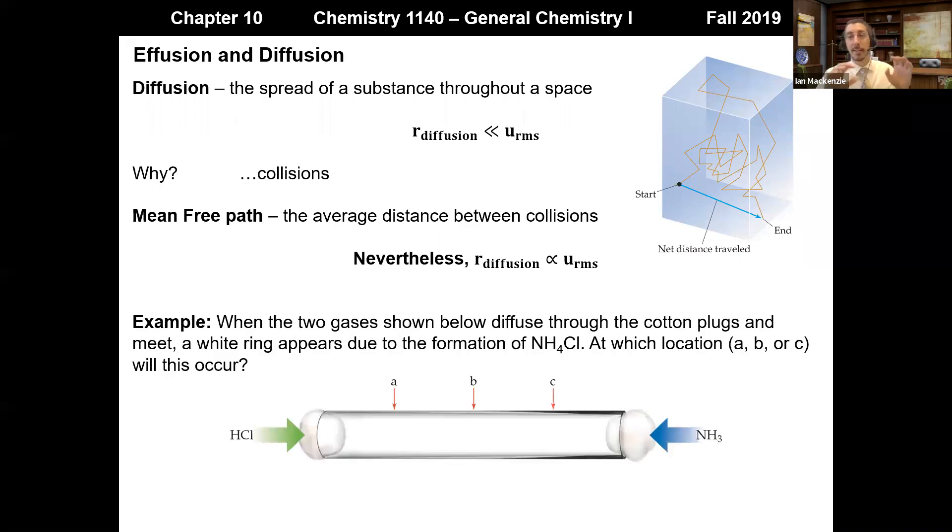Let's take a specific example of this. So when two gases diffuse through cotton plugs on the ends and then they're going to travel down that tube, eventually they will meet. And when those two gases meet, they will react to form a white solid, which will be shown as a white ring. So we've got HCl on one side and ammonia on the other side. At which location will they meet? At A, B, or C?